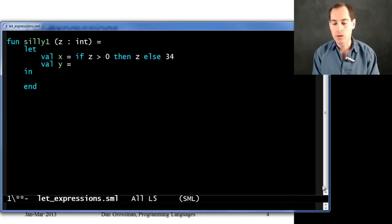And then when I do another binding, say val y, I can use x, I can use z, I can use whatever expression I want. And so that seems like a perfectly reasonable expression for binding to y.